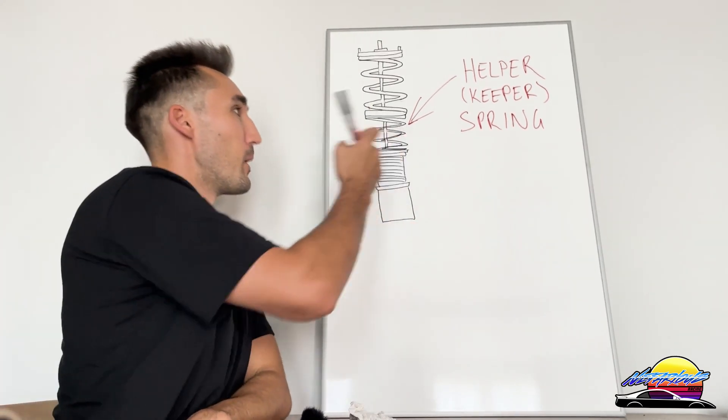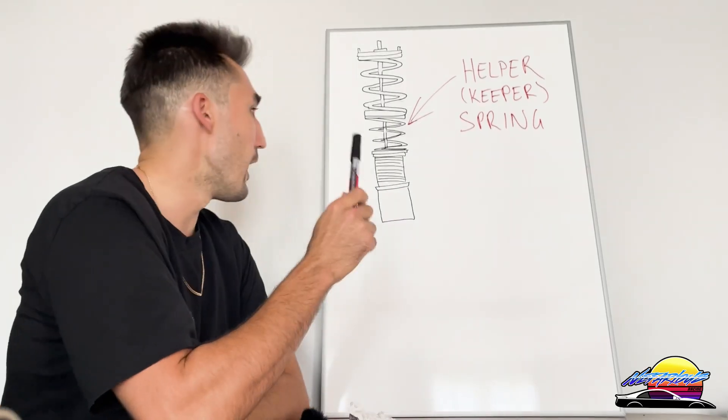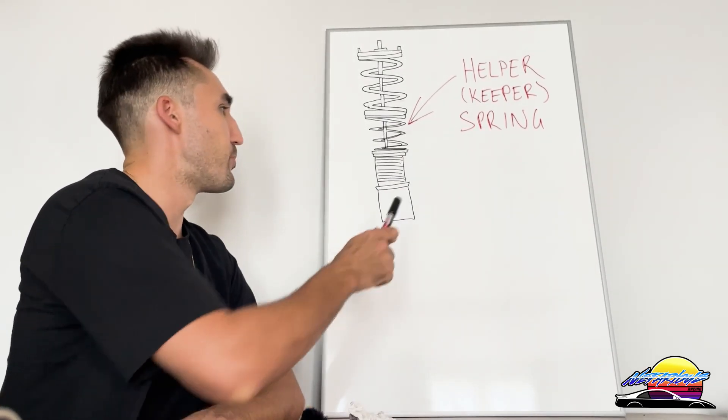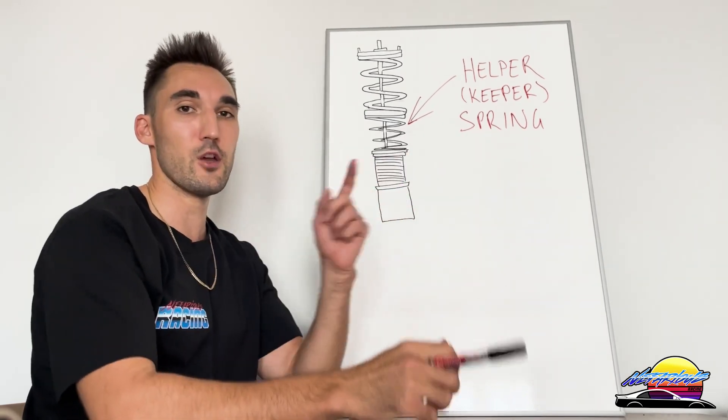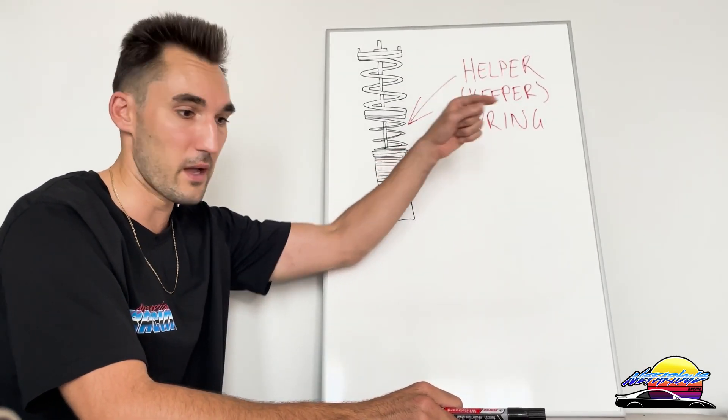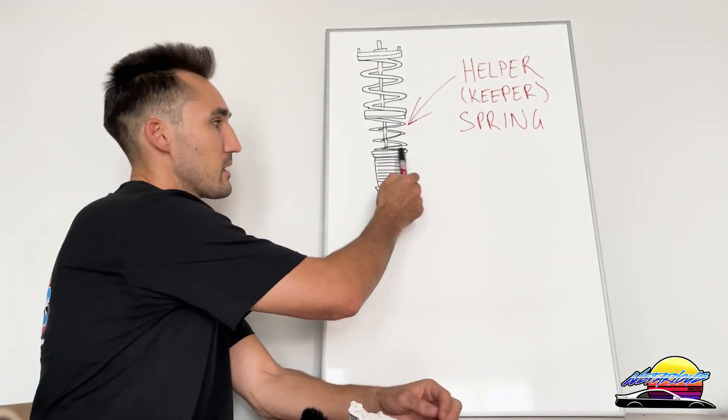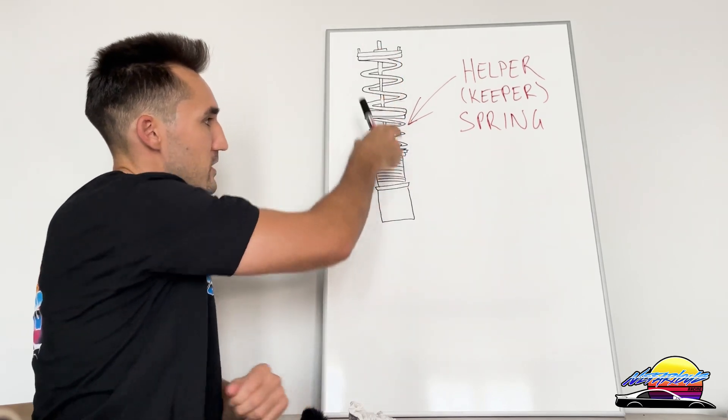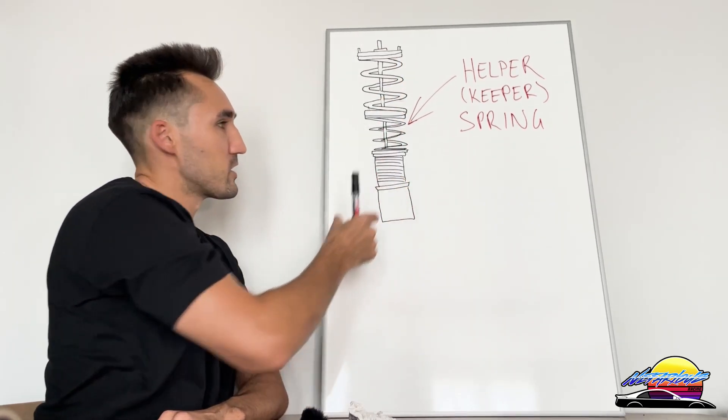These helper springs are typically only on coilovers that have spring perch height adjustment. I've made a video about the difference between those, so if you don't know what the difference is, check out that video. Basically, if the coilover adjusts by just the spring perch, meaning you lower where the spring sits in relation to the damper body...